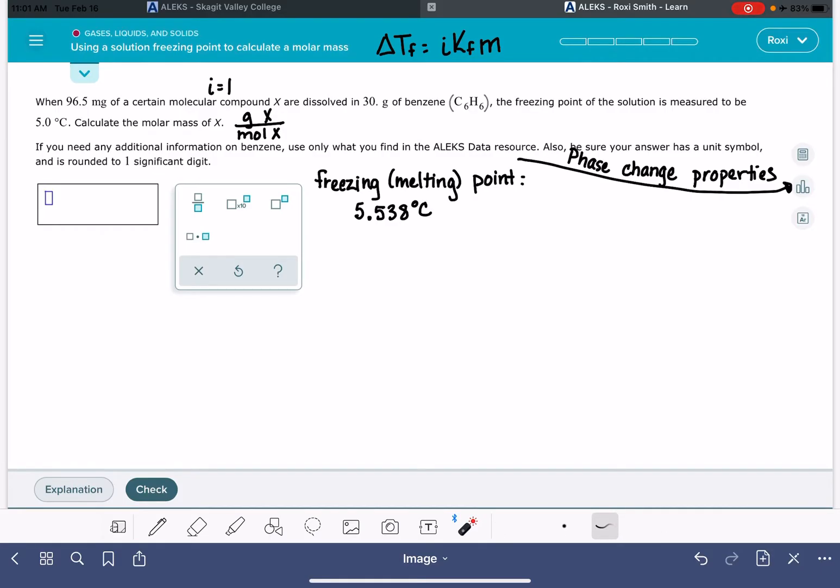This substance, this solution, has a freezing point of 5 degrees C. So that means that our change to the freezing point, delta Tf, is 0.538 degrees C. The change to the freezing point is the difference between the freezing point of the solution and the freezing point of the pure benzene.